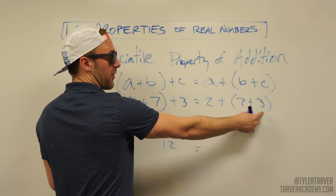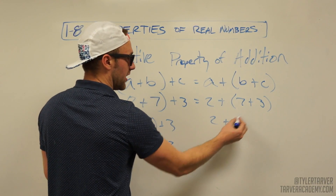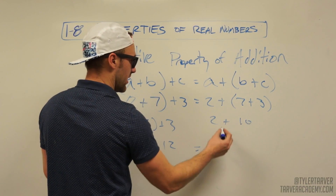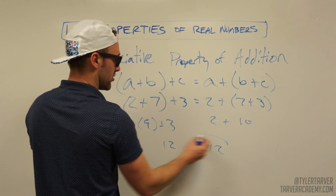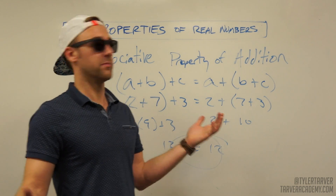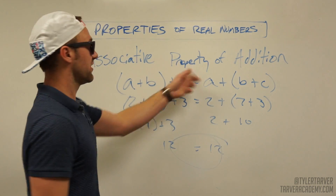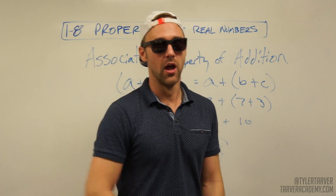Now on this one, we use order of operations — seven plus three first. So two plus 10. Two plus 10 is 12. 12 equals 12, of course it does, because of the associative property of addition.